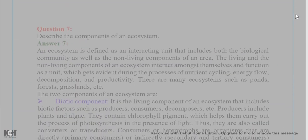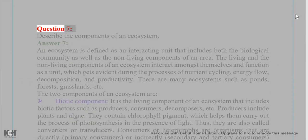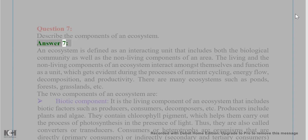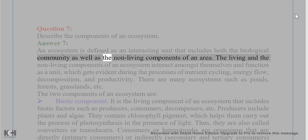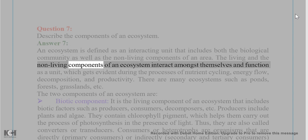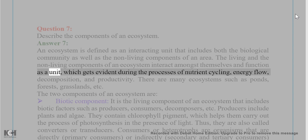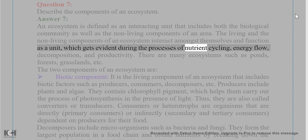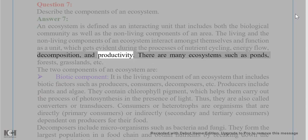Question 7: Describe the components of an ecosystem. Answer 7: An ecosystem is defined as an interacting unit that includes both the biological community as well as the non-living components of an area. The living and non-living components interact among themselves and function as a unit, evident during the processes of nutrient cycling, energy flow, decomposition, and productivity.